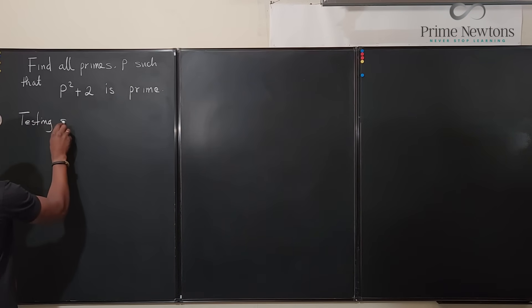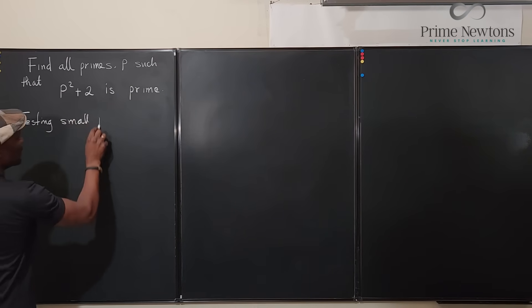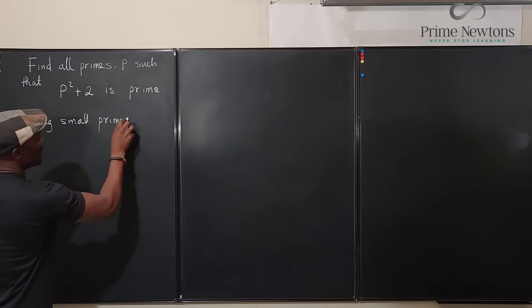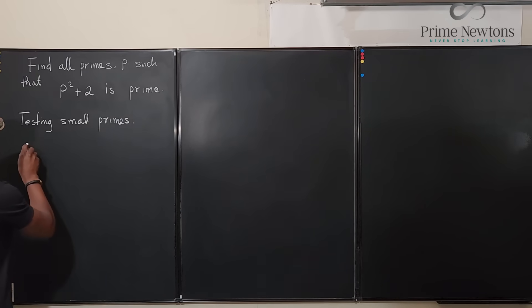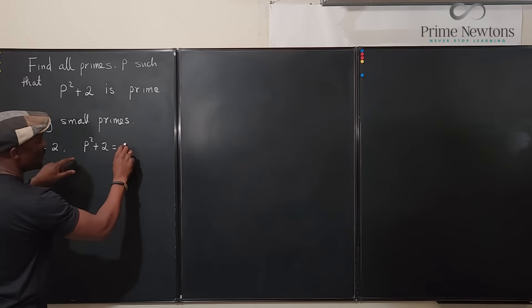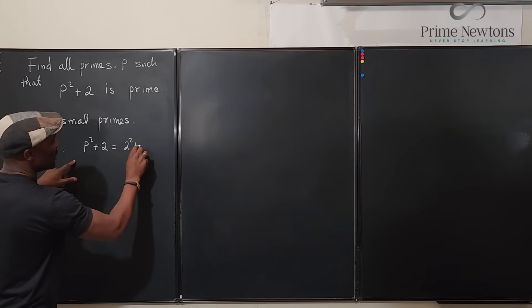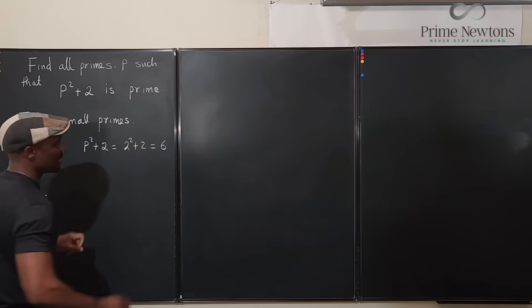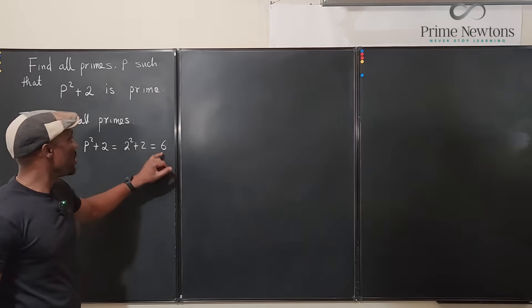So 2 is a prime number. If p equals 2, then p squared plus 2 will be equal to 2 squared plus 2 which is equal to 6. But 6 is not a prime number, so it does not satisfy the second condition. So we say not prime.